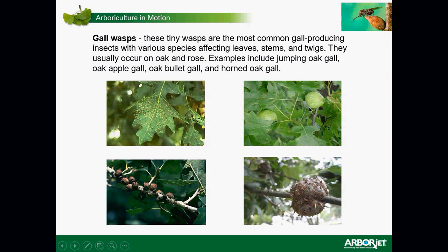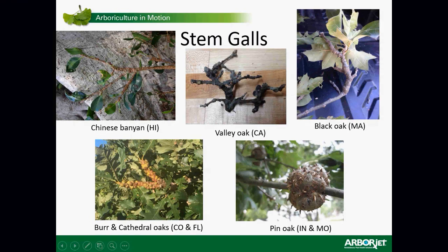Here we have apple galls, horned oak galls, blister galls on oak, and bullet galls also on bur oak. These are some photographs of some of the different stem galls that I've been working with over the past four or five years. We have a Chinese banyan stem gall — this is a species of ficus. There are two species of gall wasps: one makes galls specifically on the leaves, and the other sister species makes galls on the branch stems. But it's only the stem galls that actually cause significant harm to the tree.